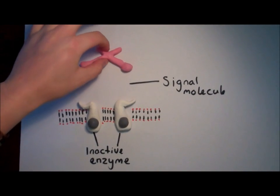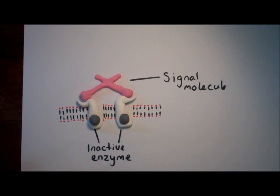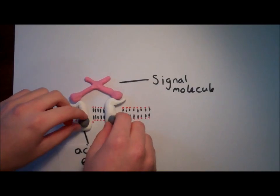When the signal arrives, it slots into both of these parts, connecting them together. This forms an active enzyme. The enzyme then triggers the reactions inside the cell.